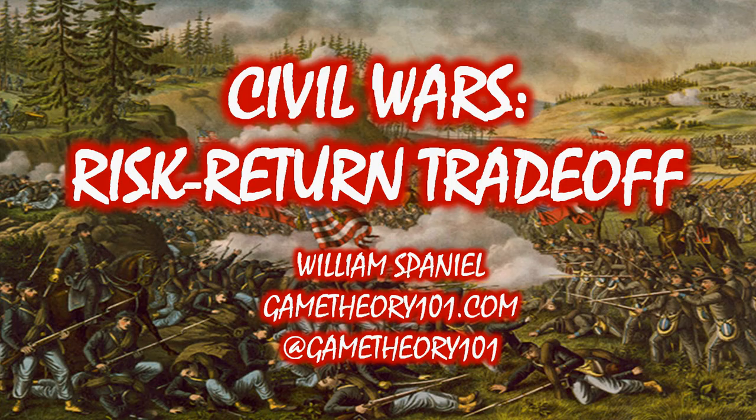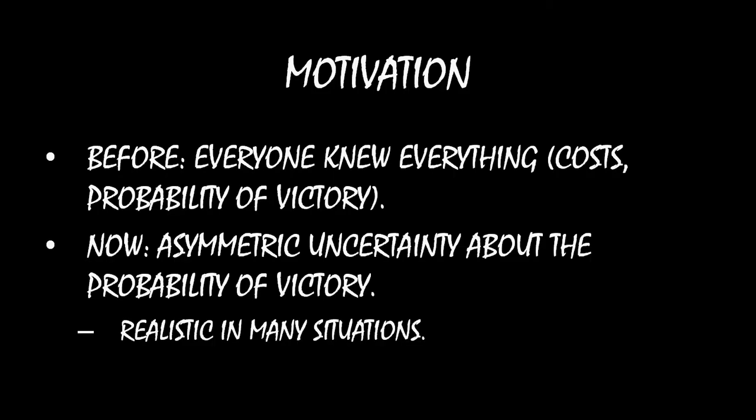To motivate this, think about last lecture where we looked at the ultimatum game. In that ultimatum game, everyone knew everything that was relevant to the interaction. Both the government and the rebel group knew about their own costs for fighting, the other side's costs for fighting, and the relative likelihood of victory should bargaining break down. In contrast, in this lecture, we're going to see when there's asymmetric uncertainty, or incomplete information, about the probability of victory.